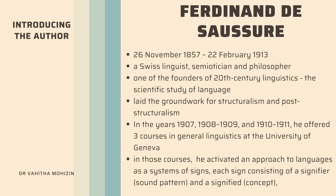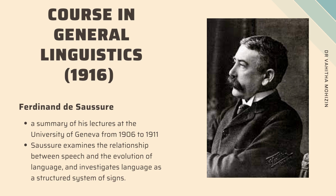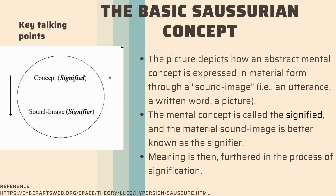In those courses, he articulated an approach to languages as systems of signs, each sign consisting of a signifier — that is a sound pattern — and a signified — that is the concept. In this text, Saussure summarized his lectures at the University of Geneva from 1906 to 1911, examining the relationship between speech and the evolution of language and investigating language as a structured system of signs.